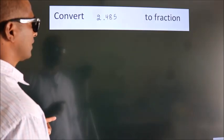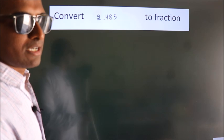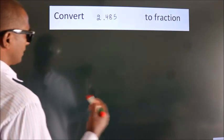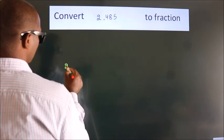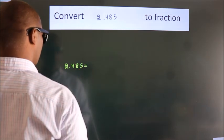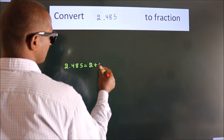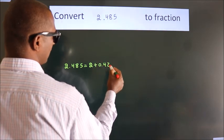Convert 2.485 to fraction. How do we convert this? Given is 2.485. First we should break this into 2 plus 0.485.